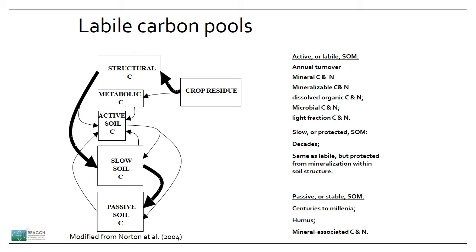Therefore, when we discuss soil organic matter dynamics, we can classify soil organic matter into different groups. In this presentation, I will be using a three-pool approach to classify soil organic matter, in which the active pool includes all fractions of organic materials that turn over within a year and supply nutrients for crops grown in the next season. For example, mineralizable carbon and nitrogen, easily decomposable organic materials, and microbial biomass come into this fraction.